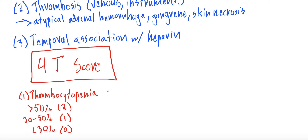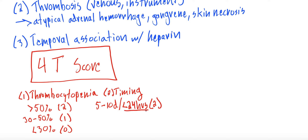The second T is timing — the temporal association with heparin. If thrombocytopenia occurred 5 to 10 days after starting heparin, or within less than 24 hours in a patient previously exposed to heparin, that is 2 points. If this timeline is probable but unclear, it's 1 point. If the drop occurred less than 4 days after starting heparin without prior exposure, it's 0 points.